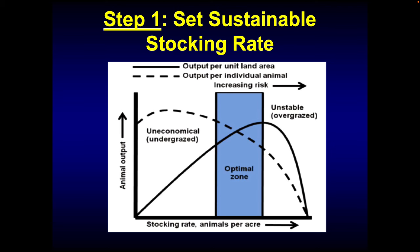As stocking rate increases, our output per unit land area increases to a point. Once you get to a certain point and you keep increasing your stocking rate, all of a sudden the whole system kind of crashes. You have too many animals, the forage can't grow fast enough, and they're grazing it down before it has a chance to recover. Next thing you know, you've got pastures that are not productive. As we start to increase stocking rate, our gain per animal tends to decrease.